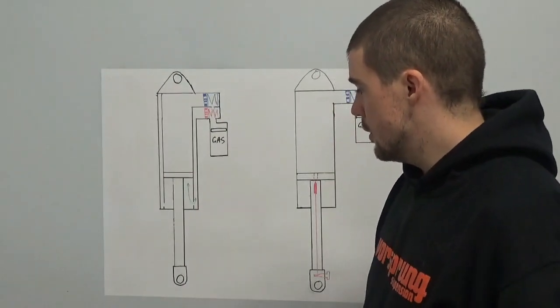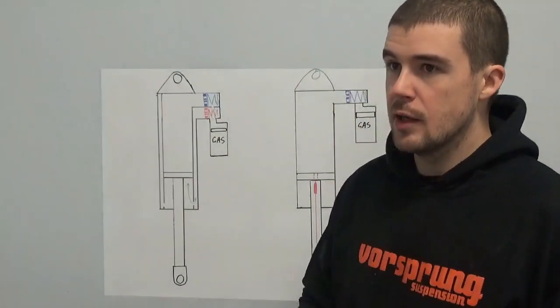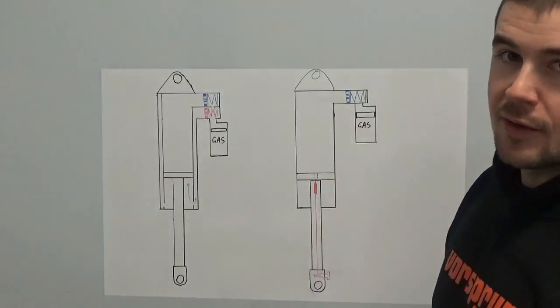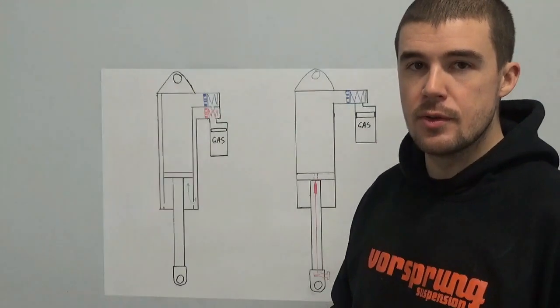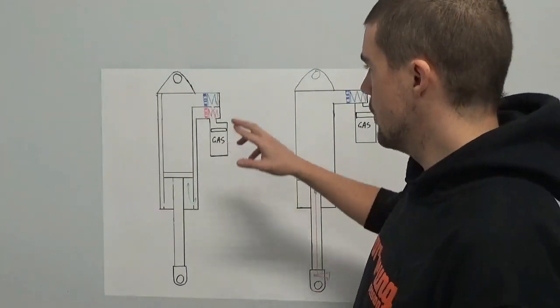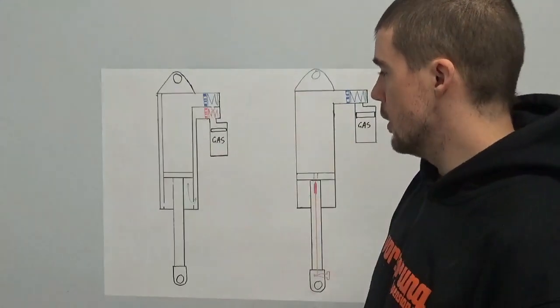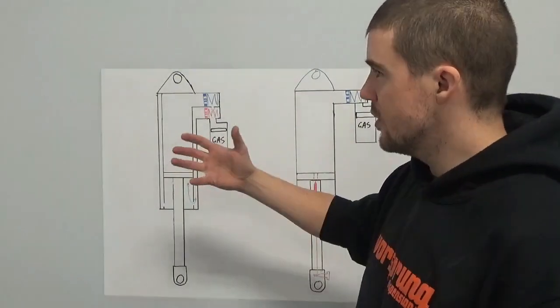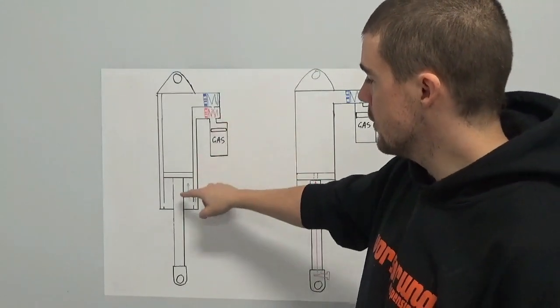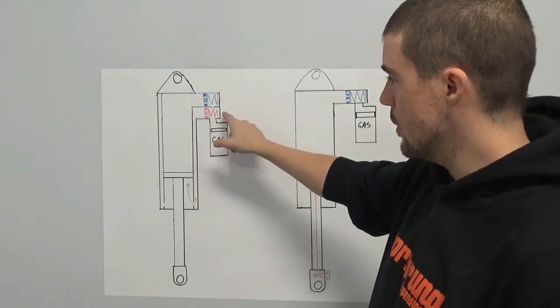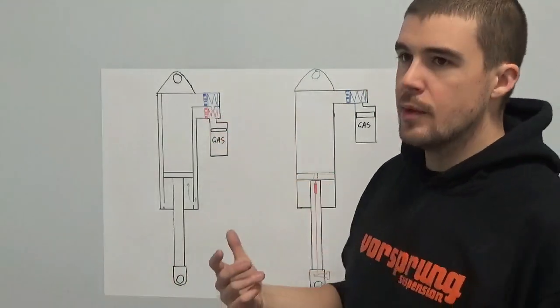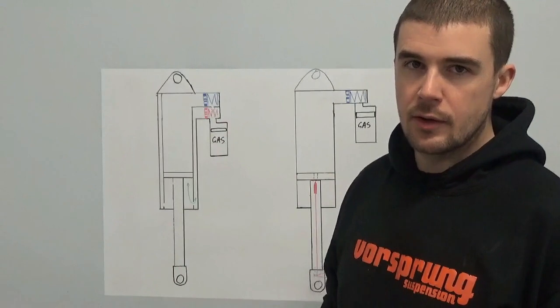Let's talk about some of the potential shortcomings of each design. As I mentioned, with single tube design here, cavitation is a potential issue if it's not valved and set up correctly. In the twin tube design, one design limitation, if it's laid out in exactly this manner, is that if you have a high and low speed rebound adjuster up here, as both Fox and Cane Creek use, then you are limited to a digressive rebound curve.